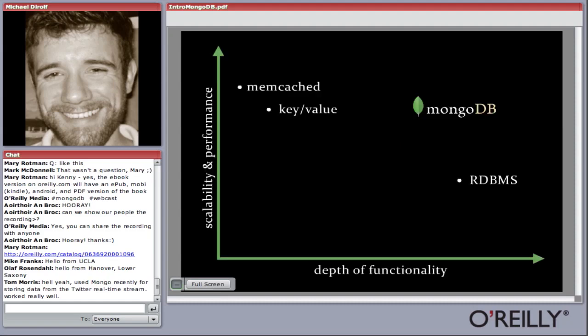I'd like to show this chart when I talk about MongoDB because it does a good job of quickly summarizing what our goals are. On the left is scalability and performance — the most high-performing data storage on the chart is Memcached. On the bottom is depth of functionality. Memcached is over to the left because keys can get evicted without you knowing about it, so it's not really persistent, and it lacks some functionality you'd want in a general-purpose web data store.